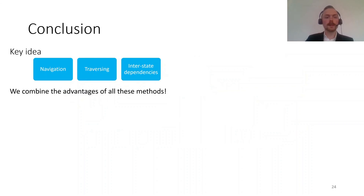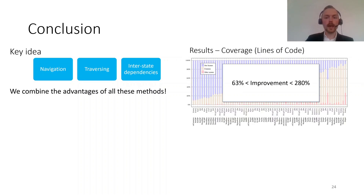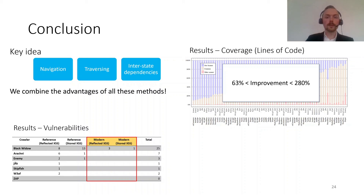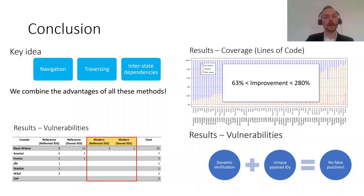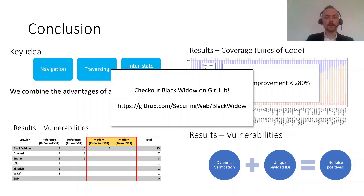To conclude, our key idea is to combine navigation, traversing, and interstate dependencies into one approach. This improves coverage by between 63% and 280% compared to the union of all other scanners across all tested applications. We find more vulnerabilities in reference applications and are the only scanner finding vulnerabilities in modern applications. Our combination of dynamic verification and unique payload IDs also keeps false positives to a minimum. Black Widow is open source and available on GitHub — make sure to check it out. Thank you all for attending, and I look forward to the questions in the Q&A.